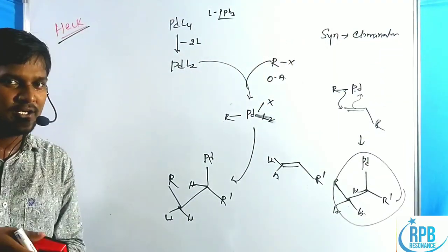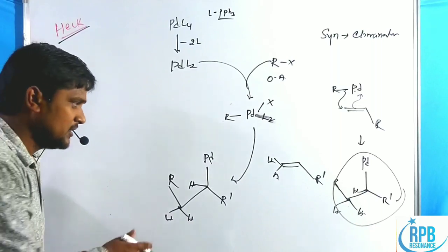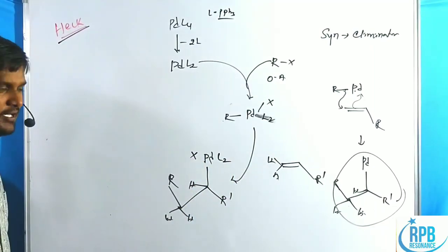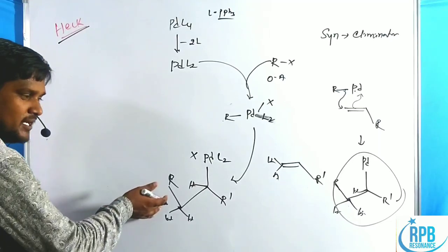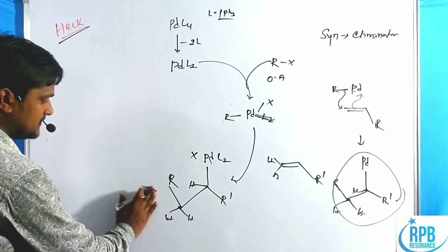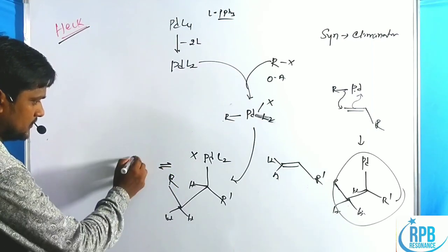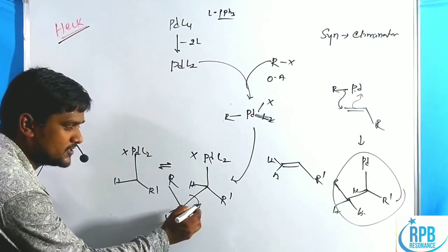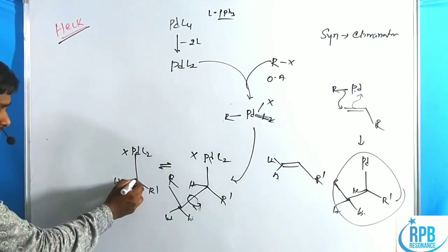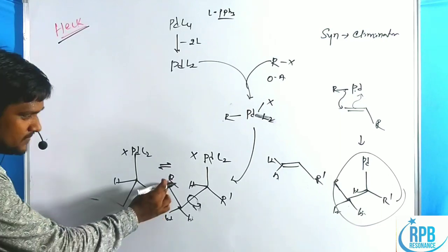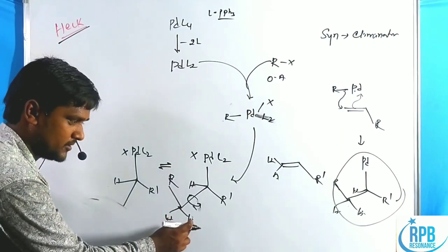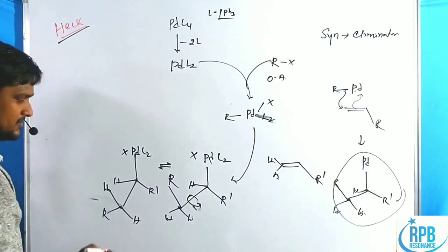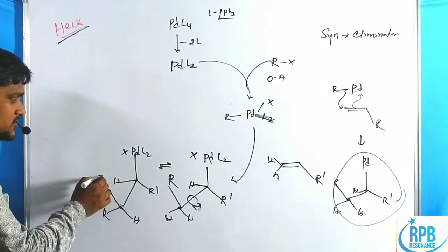The rearrangement occurs via C-C single bond rotation. The first carbon retains palladium L₂X, while the second carbon undergoes C-C rotation: R shifts to one side, hydrogen shifts to another. After rotation, hydrogen and palladium achieve syn periplanar geometry, enabling the syn elimination to give the alkene product with double bond R and R'.